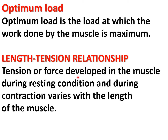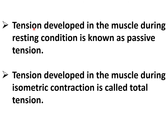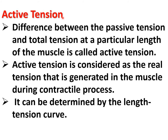Length-tension relationship: tension or force developed in the muscle during the resting condition and also during contraction varies with the length of the muscle fiber. Tension developed in the resting condition is known as passive tension, and tension developed during isometric contraction — where the length of the muscle remains the same but tension changes — is known as total tension. The difference between passive tension and total tension at a particular length of the muscle fiber is known as active tension.